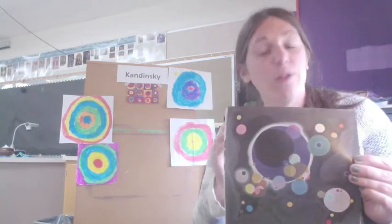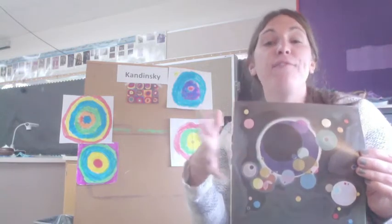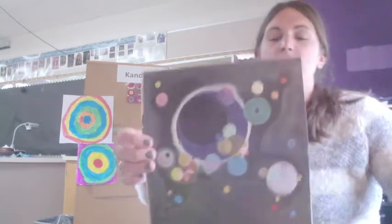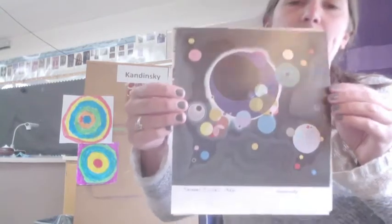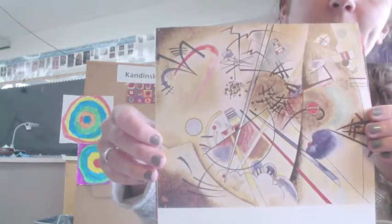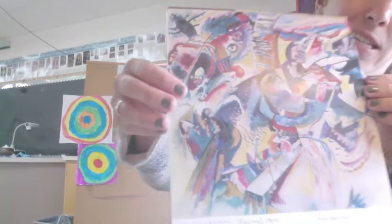He was not trying to create art that was realistic. He didn't want to make things look exactly how they look in real life. He had fun experimenting with painting different colors, lines, and shapes. Kandinsky is also known for listening to classical music while he painted, letting the sounds of the instruments guide the way he would make his paint strokes.